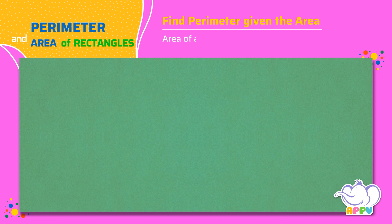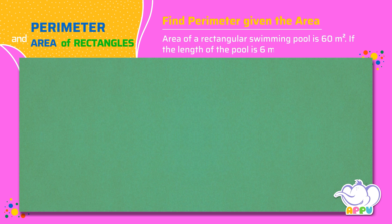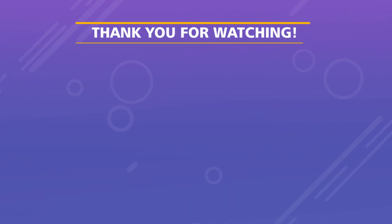Area of a rectangular swimming pool is 60 square meters. If the length of the pool is 6 meters, what is its perimeter?